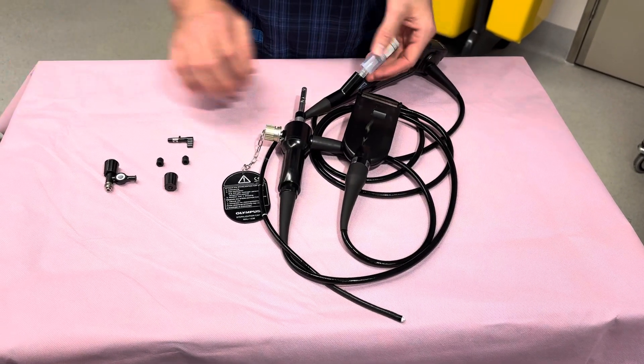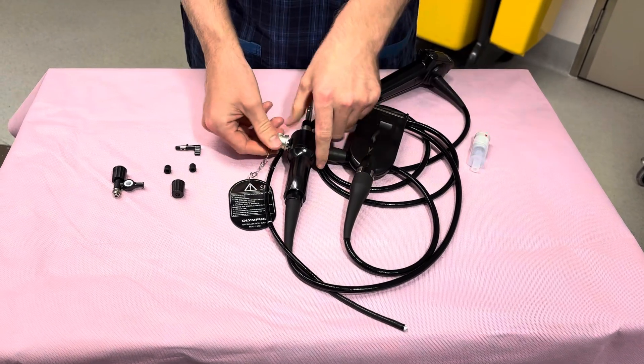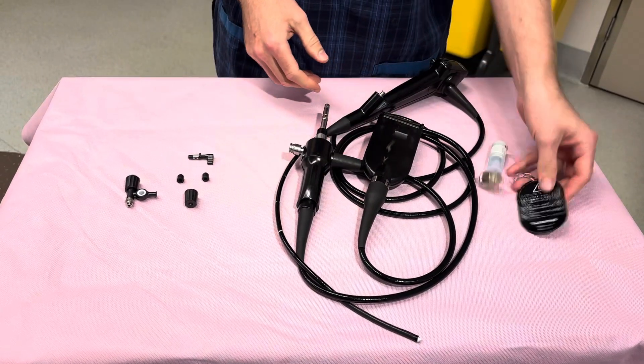Step one is to remove the booster, which pops off like that. Step two is to push and twist and take the sterilization cap off.